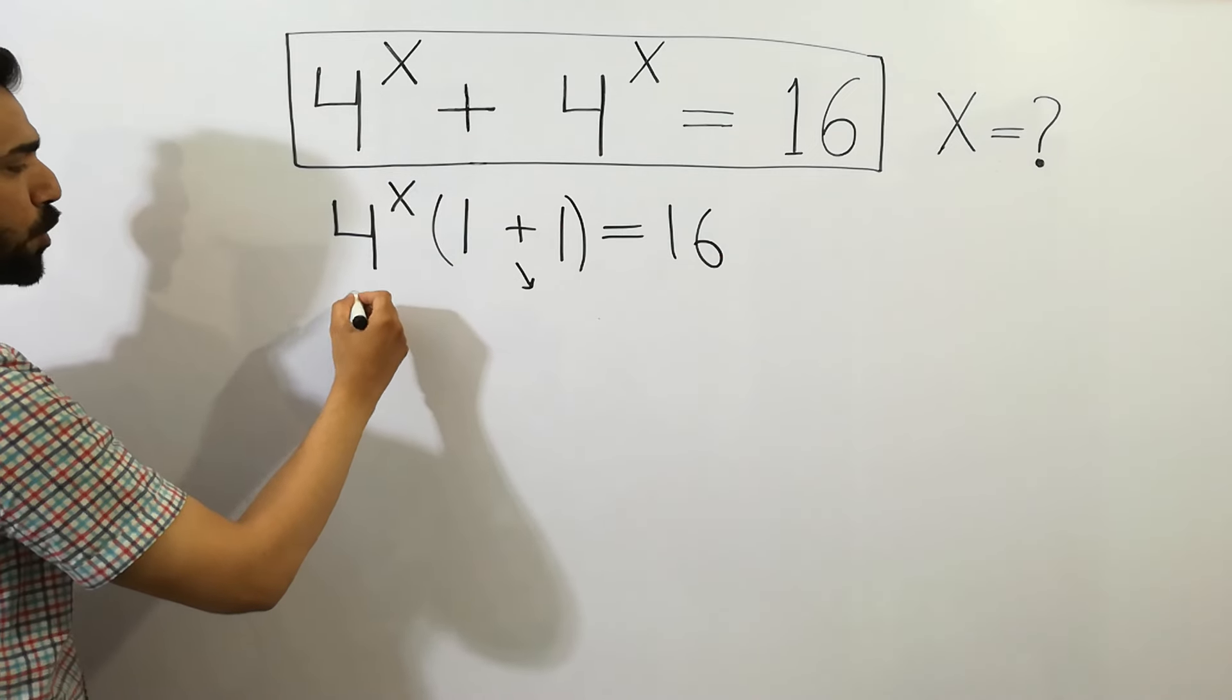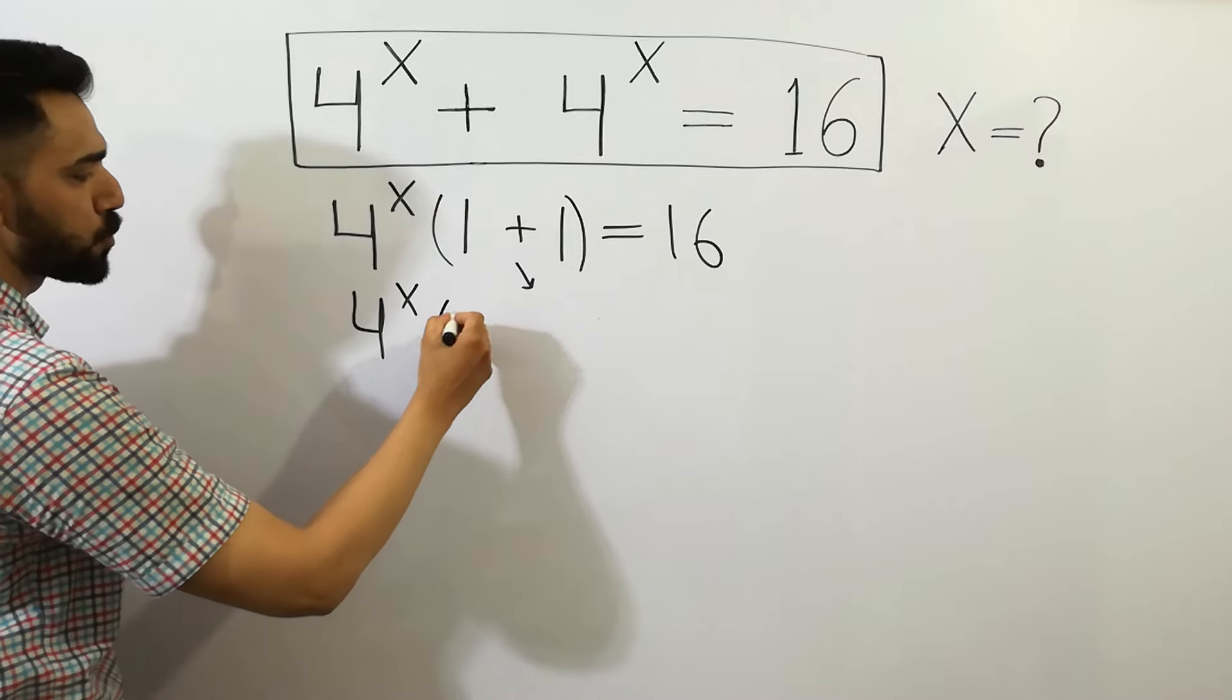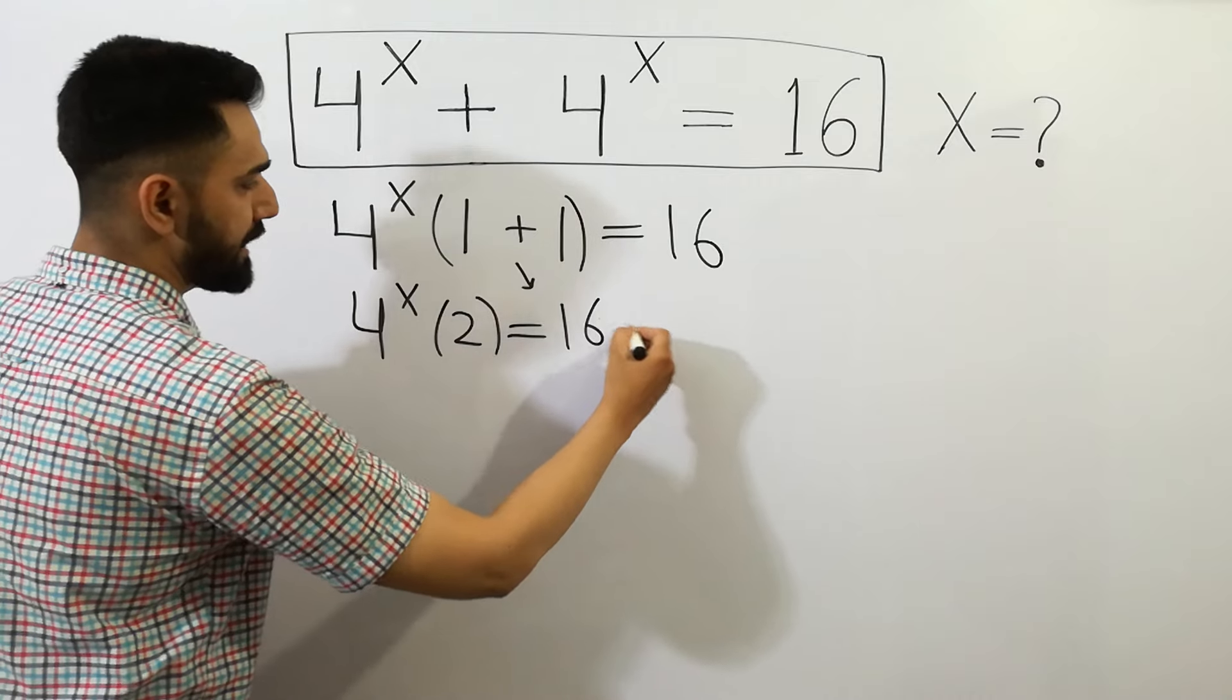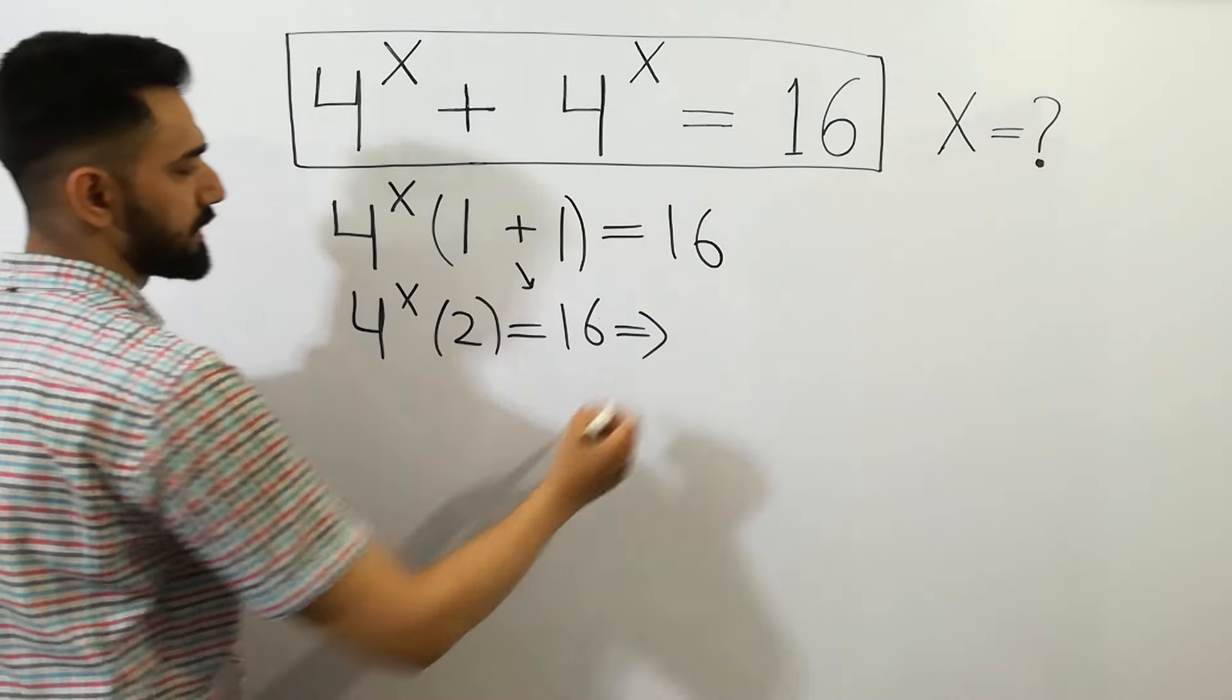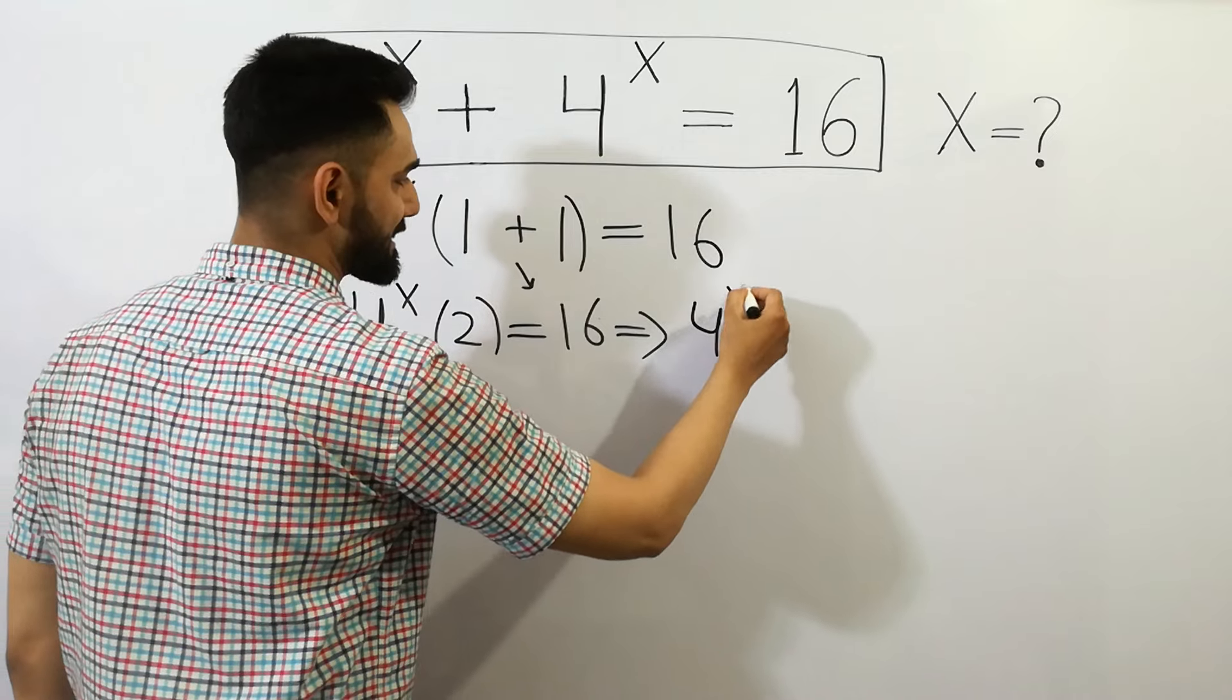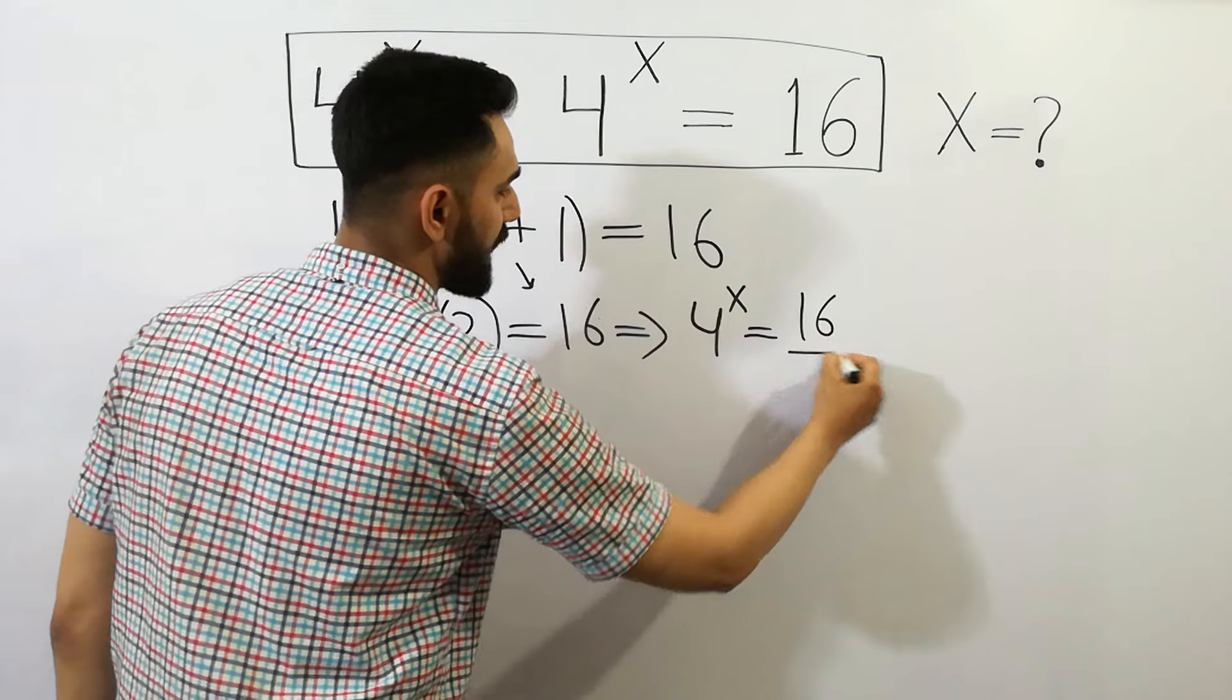So we can write 4 to the power x times 2 equals 16, which means 4 to the power x equals 16 divided by 2.